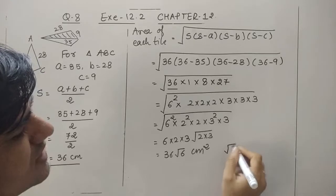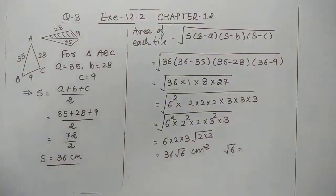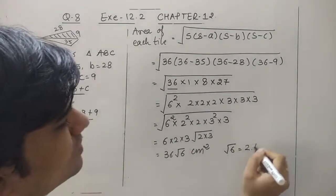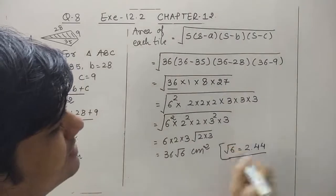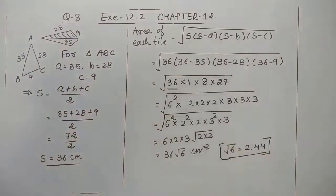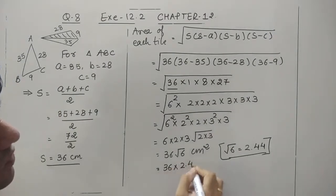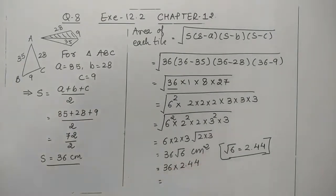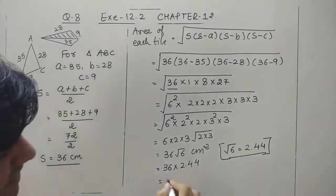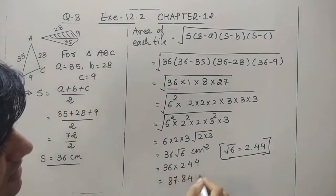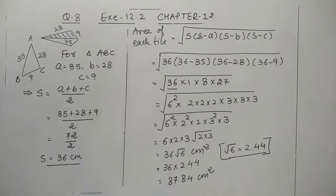We find the square root of 6 using the long division method, which gives approximately 2.44. Substituting: 36 × 2.44 = 87.84 centimeters square. Remember, this is the area of each individual tile.